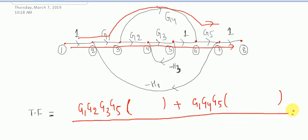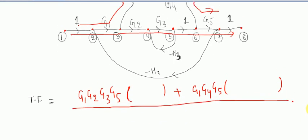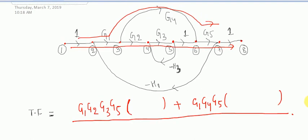For writing delta, you should observe the number of loops — individual loops, 2 non-touching loops, 3 non-touching loops, and so on. It all starts with 1 minus.